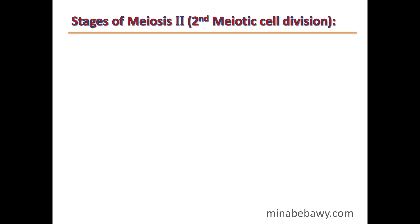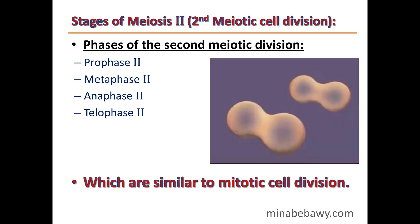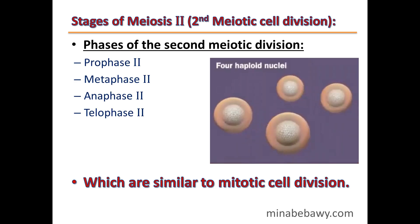The second stage of meiosis is meiosis 2, or the second meiotic cell division. Its four phases — prophase 2, metaphase 2, anaphase 2, and telophase 2 — are completely similar to the phases of mitotic cell division.